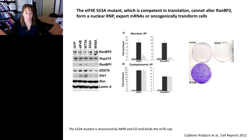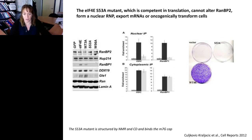Looking at anchorage-independent growth, which measures loss of contact inhibition: overexpressing 4E yields many foci, whereas the S53A mutant has completely lost its ability to transform cells, although it retains the ability to translate RNA. This really strongly suggests that the nuclear functions of 4E are relevant for its transformation potential, at least in the context we've been examining.